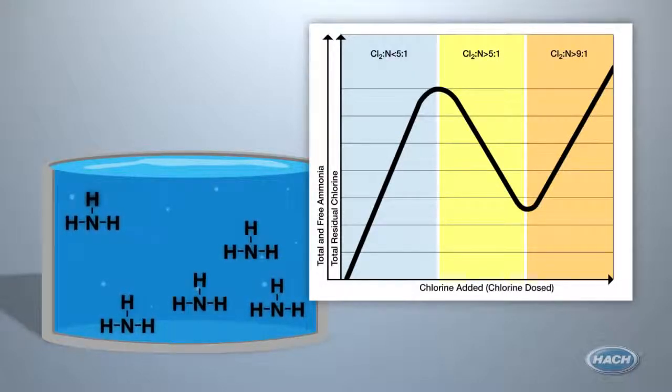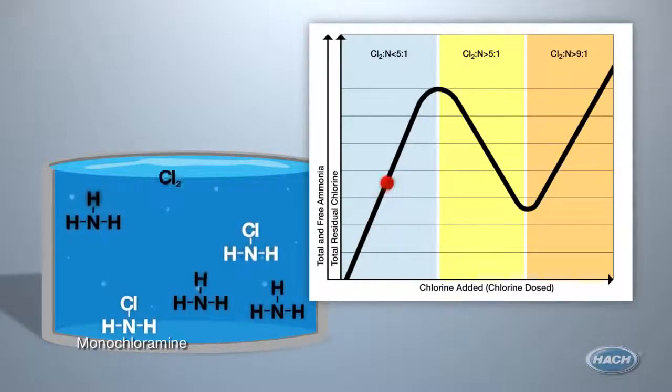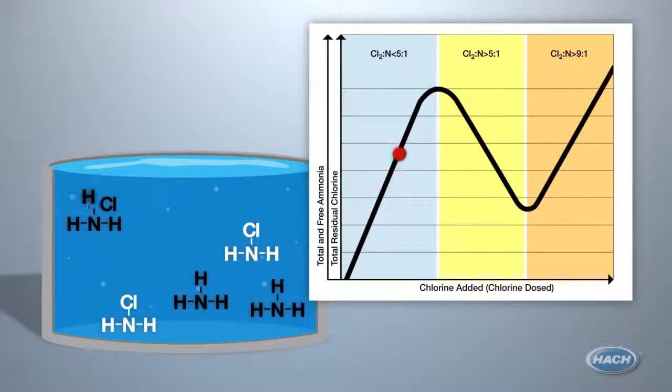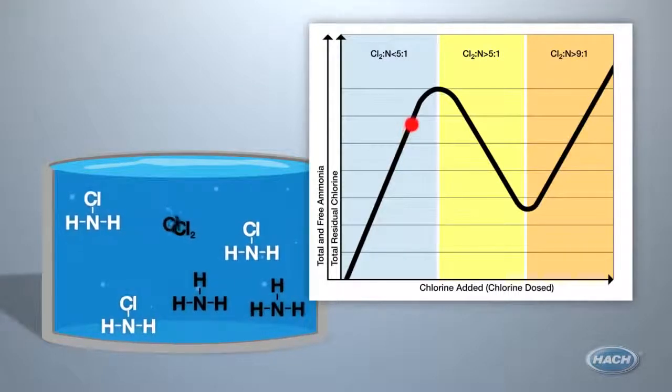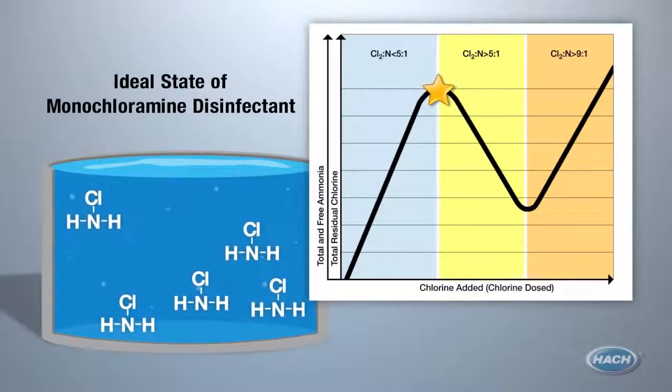You are trying to create monochloramine. The ammonia drops a hydrogen atom and the chlorine takes its place. When you have effectively bonded one chlorine molecule with each ammonia, you have achieved the ideal state of monochloramine disinfectant.